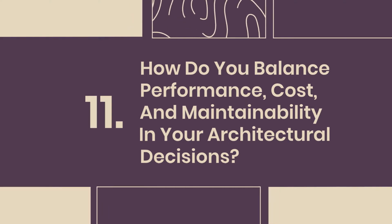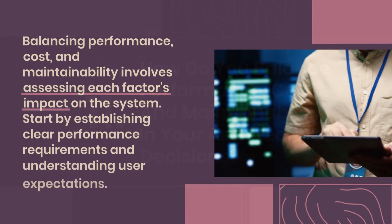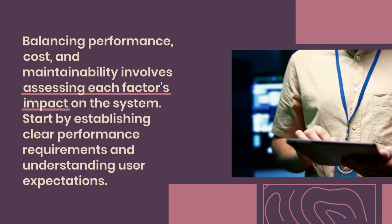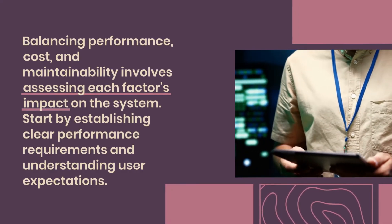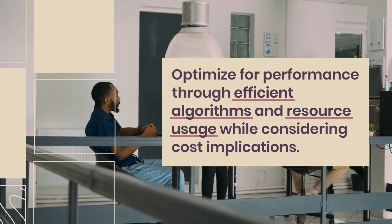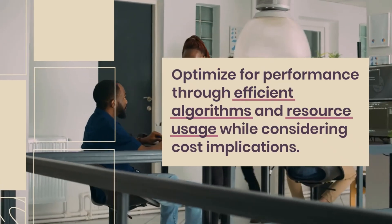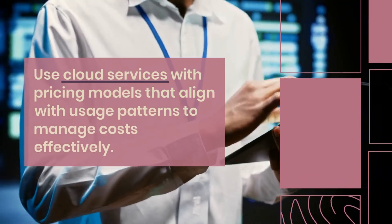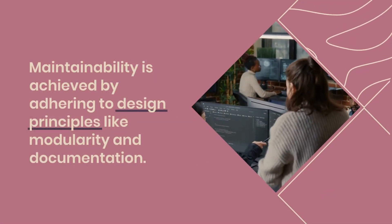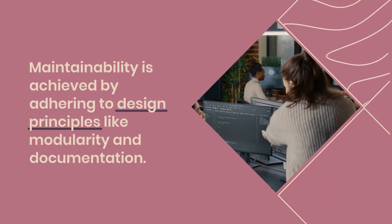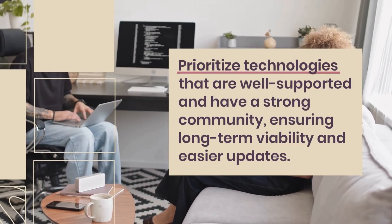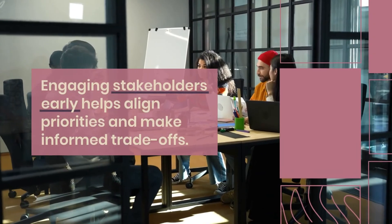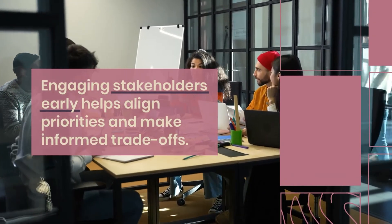Question 11: How do you balance performance, cost, and maintainability in your architectural decisions? Balancing performance, cost, and maintainability involves assessing each factor's impact on the system. Start by establishing clear performance requirements and understanding user expectations. Optimize for performance through efficient algorithms and resource usage while considering cost implications. Use cloud services with pricing models that align with usage patterns to manage costs effectively. Maintainability is achieved by adhering to design principles like modularity and documentation. Prioritize technologies that are well supported and have a strong community, ensuring long-term viability and easier updates. Engaging stakeholders early helps align priorities and make informed tradeoffs.